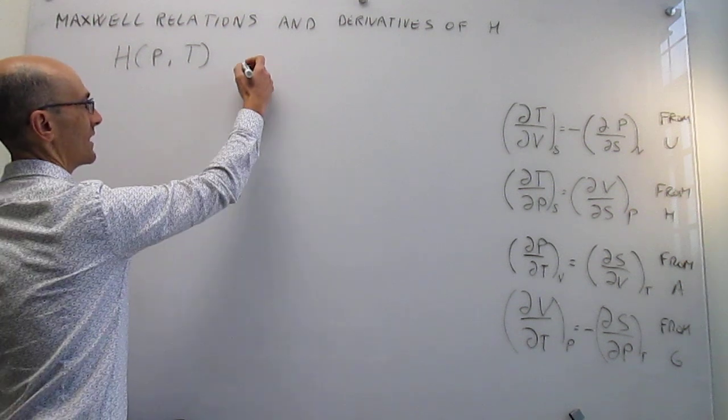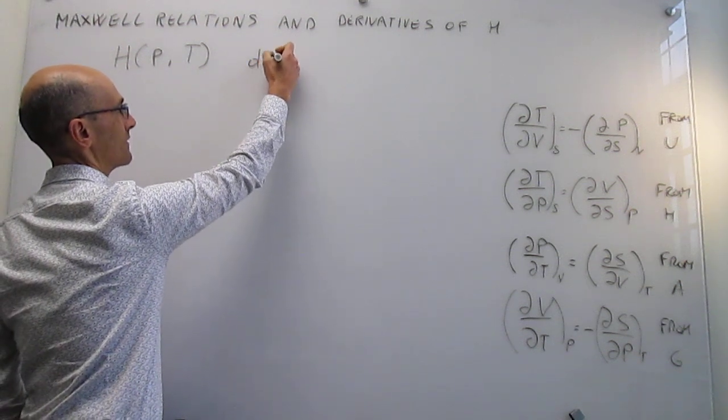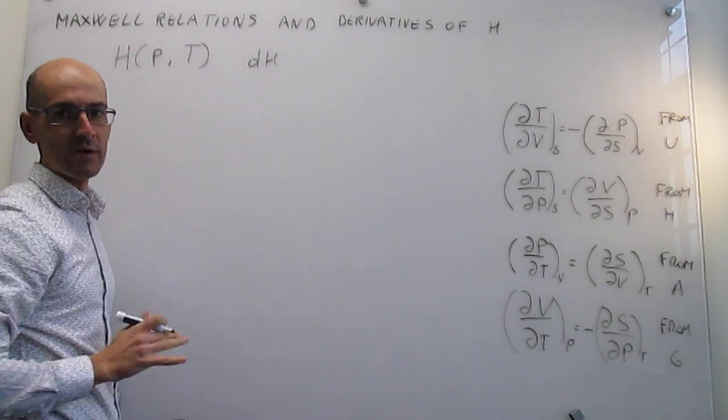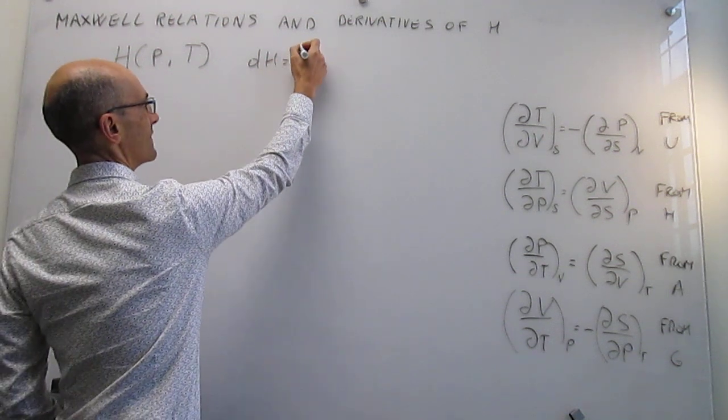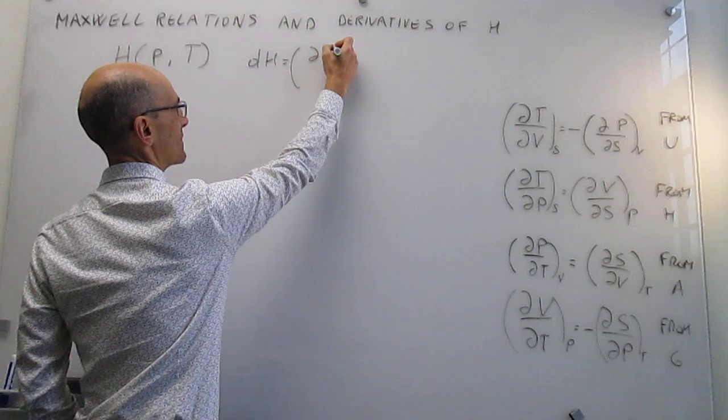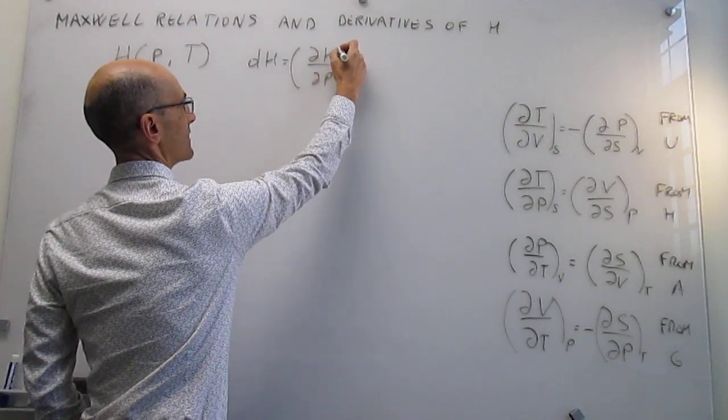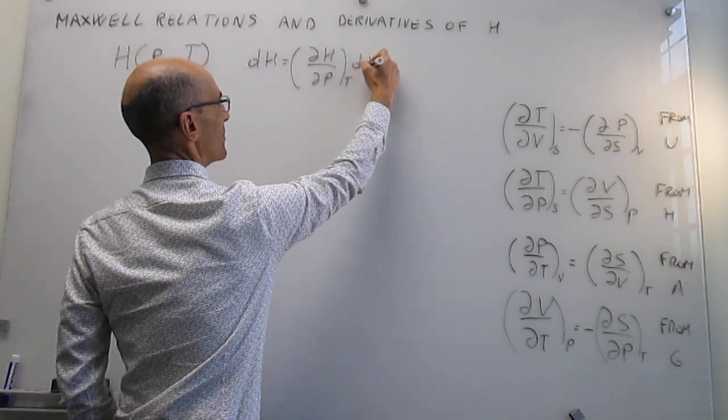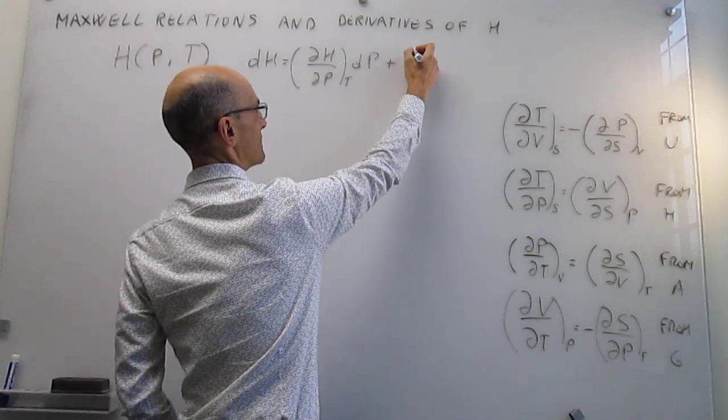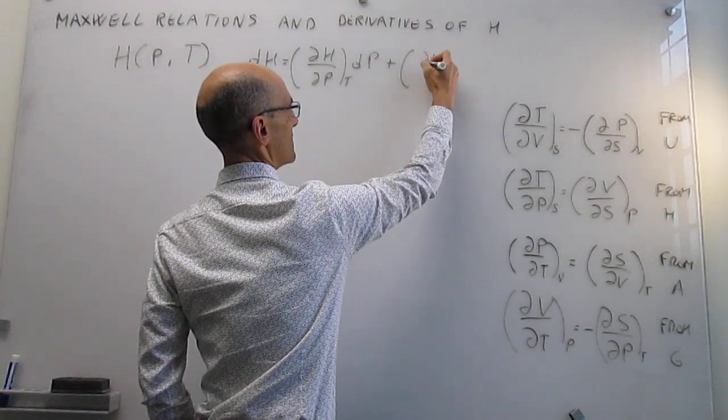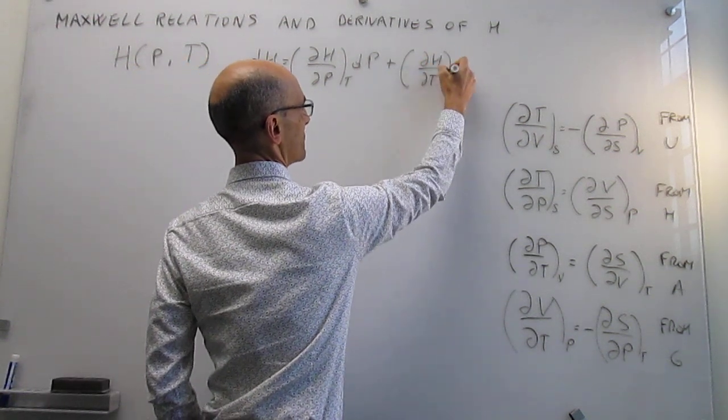Now, if we study how the total derivatives of the enthalpy look like when expressed as a function of these two variables, then we find that you will have a partial derivative with respect to pressure at constant temperature, and also a partial derivative of the enthalpy with respect to temperature at constant pressure.